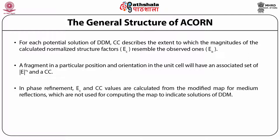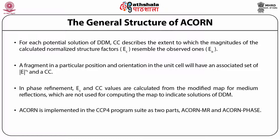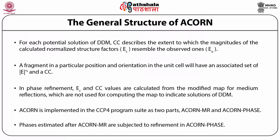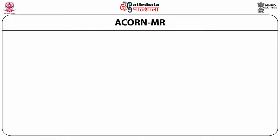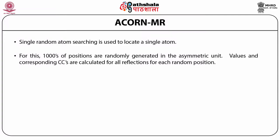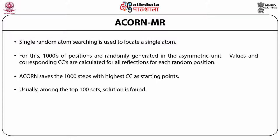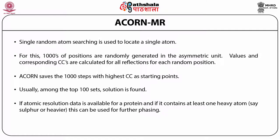In phase refinement, EC and CC values are calculated from the modified map for medium reflections, which are not used for computing the map, to indicate solutions of dynamic density modification. ACON is already implemented in the CCP4 program suite as two parts: ACON MR for molecular replacement and ACON phase for phase refinement. Phases estimated after ACON MR are subjected to refinement in ACON phase. Single random atom searching is used in ACON MR to locate a single atom, and thousands of positions of randomly generated atoms in the asymmetric unit are used. ACON saves the thousand steps with the highest CC as starting points, and usually among the top 100 set a solution will be found.